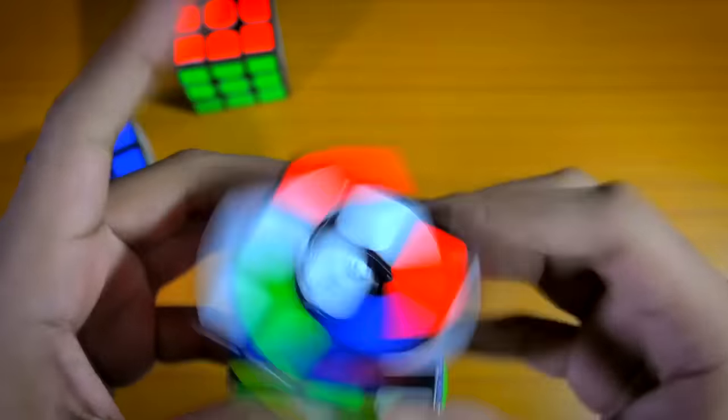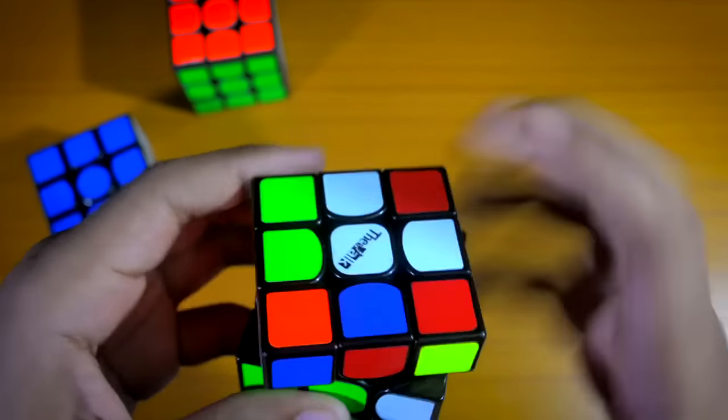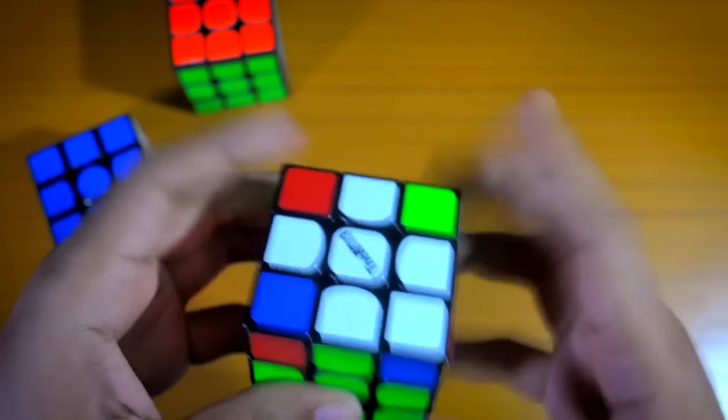The cube has a hollow, light and controllable turning. It is definitely a good mix of controllability and speed. The feel is similar to the Yuexiao or the Meiying. However, the Valk is a bit smoother than them.